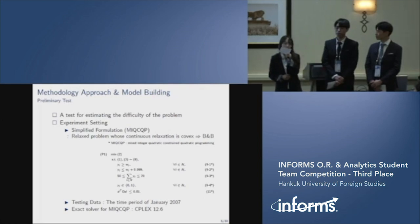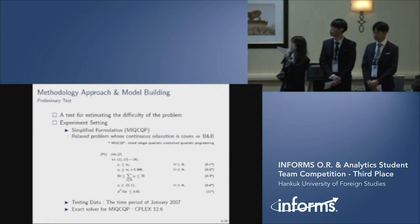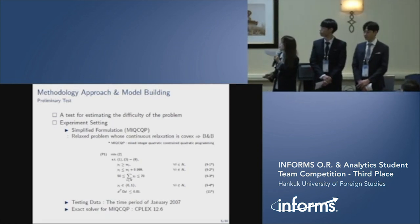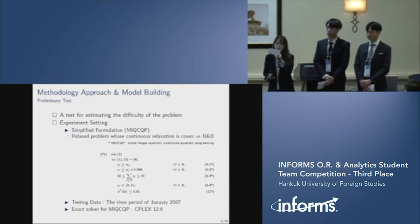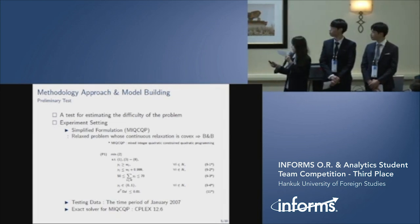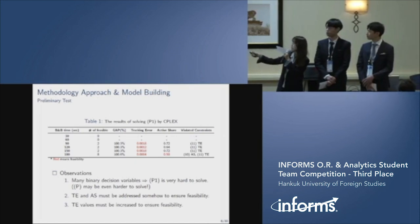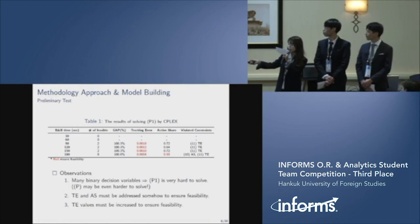Before building a model, we conducted a preliminary test for estimating the difficulty of the problem. For this test, we used the simplified formulation by excluding those constraints that make the continuous relaxation non-convex. The problem can be solved by branch and bound, so we used CPLEX as an optimization solver. The table shows that gap is really high and tracking error is too low to satisfy the lower bound.